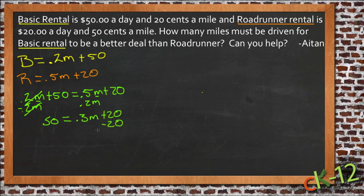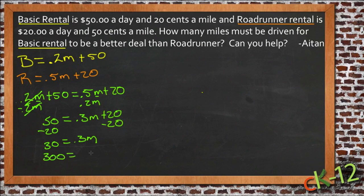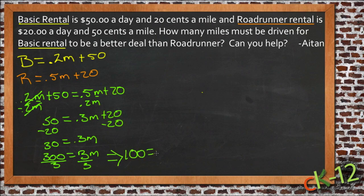Then we subtract 20 from each side and get 30 = 0.3M. Then we divide both sides by 0.3 and we get M = 100. So that tells us that M is 100 where these two prices are the same — if you travel 100 miles, the prices are equal.